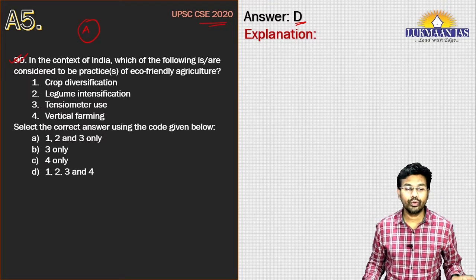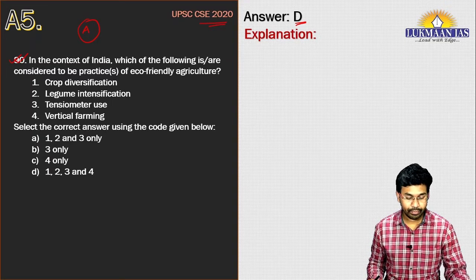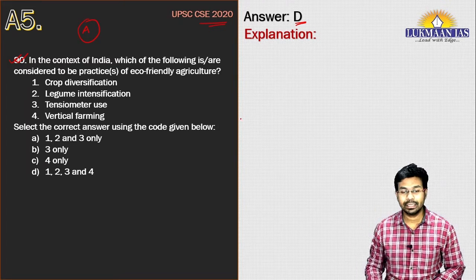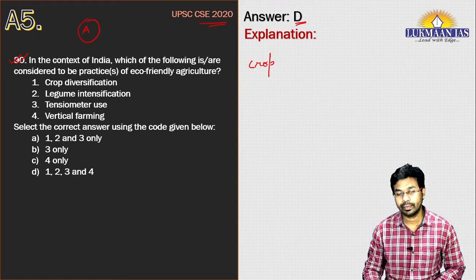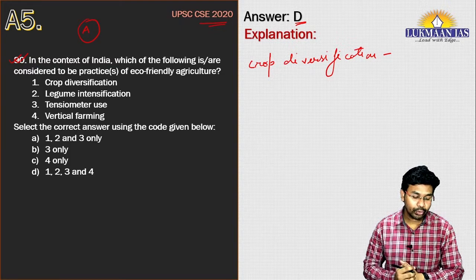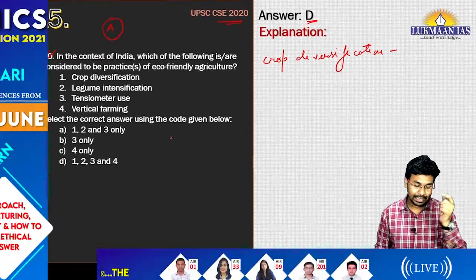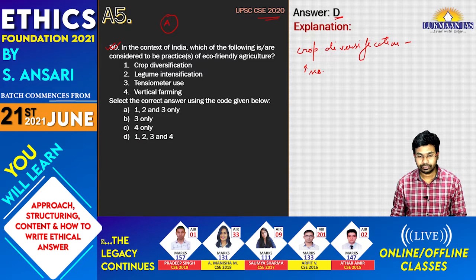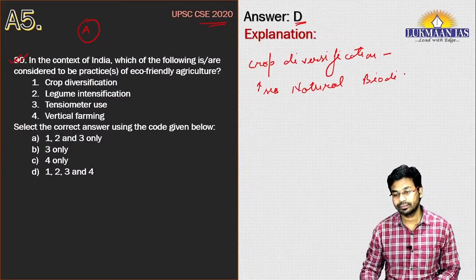Crop diversification involves the addition of new crops or cropping systems. It also involves the introduction of a greater range of varieties and increases natural biodiversity.